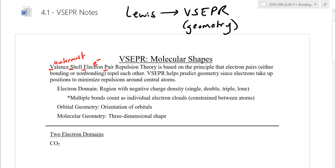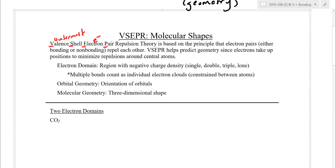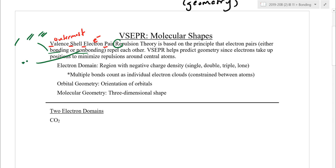Not only do the two electrons in a pair repel each other, but each electron pair also repels other pairs around it. VSEPR is based off the fact that electrons in the outermost shell repel each other — whether they're bonding electrons like single, double, or triple bonds, or non-bonding electrons like lone pairs. Wherever you have electrons they're going to repel, push far away, and we end up with the geometry that minimizes these repulsions and maximizes the bond angles.